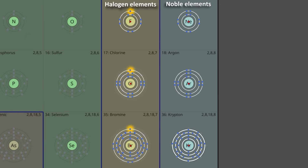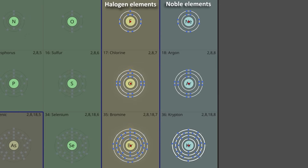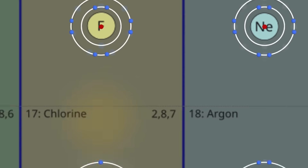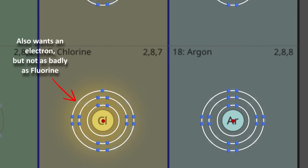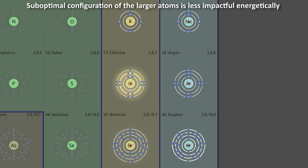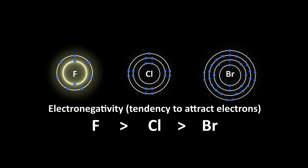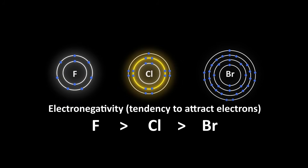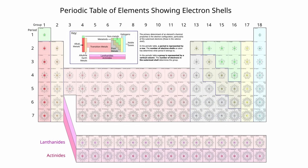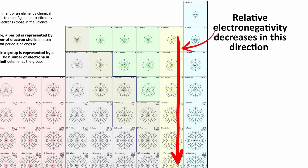Halogens badly want one more electron to make their shell full. Fluorine is the most electronegative element. Larger atoms below it also want an electron, but not as badly, because they are larger atoms with less difference in energy between the levels. So a suboptimal configuration for a large atom like chlorine or bromine is less impactful from a potential energy perspective than it is for a smaller atom like fluorine. Their energy states are closer together, so the potential energy difference between adding one electron versus not adding one for bromine is less — and thus less reason to hunt for a lower energy state. As you go down the column of halogen elements, relative electronegativity decreases.